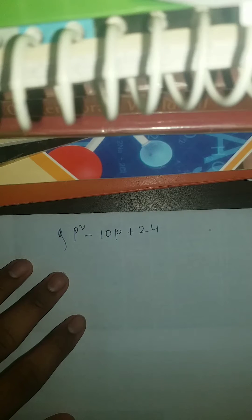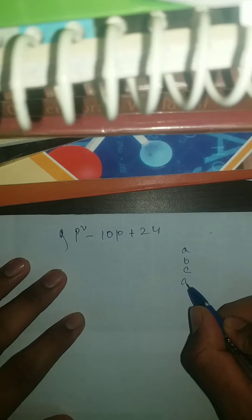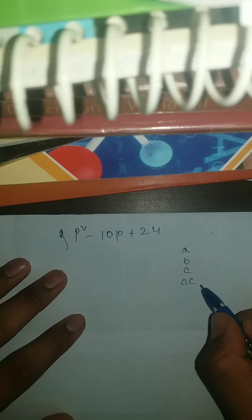It's very simple and we're gonna do this by middle term method. So here I would recommend you guys to write A, B, C and A, C. A, C is your what? A into C.